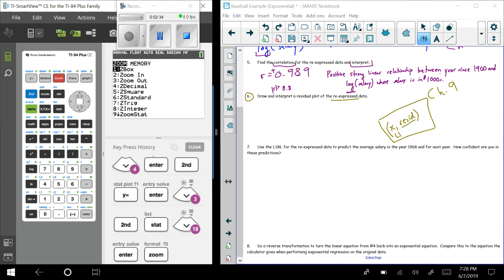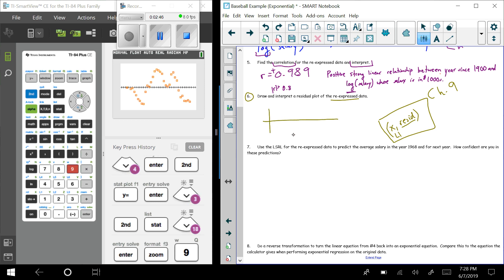And then we hit zoom and hit 9, and then we see this residual plot. Now we draw this just like this here. These are still, this is L1 down here. This is the year since 1900.